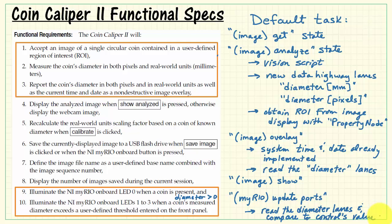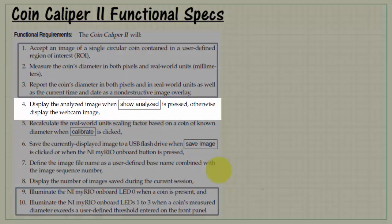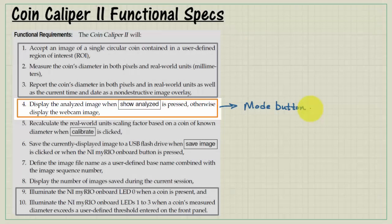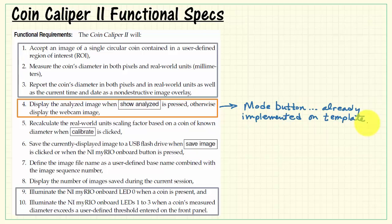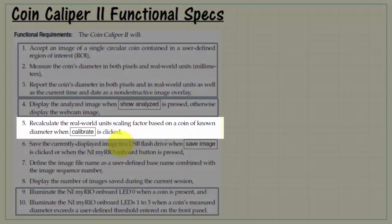That takes care of the default task. Let's move on to specification number 4: display the analyzed image when Show Analyzed is pressed; otherwise, display the webcam image. This is a mode button and is already implemented on the machine vision app template.